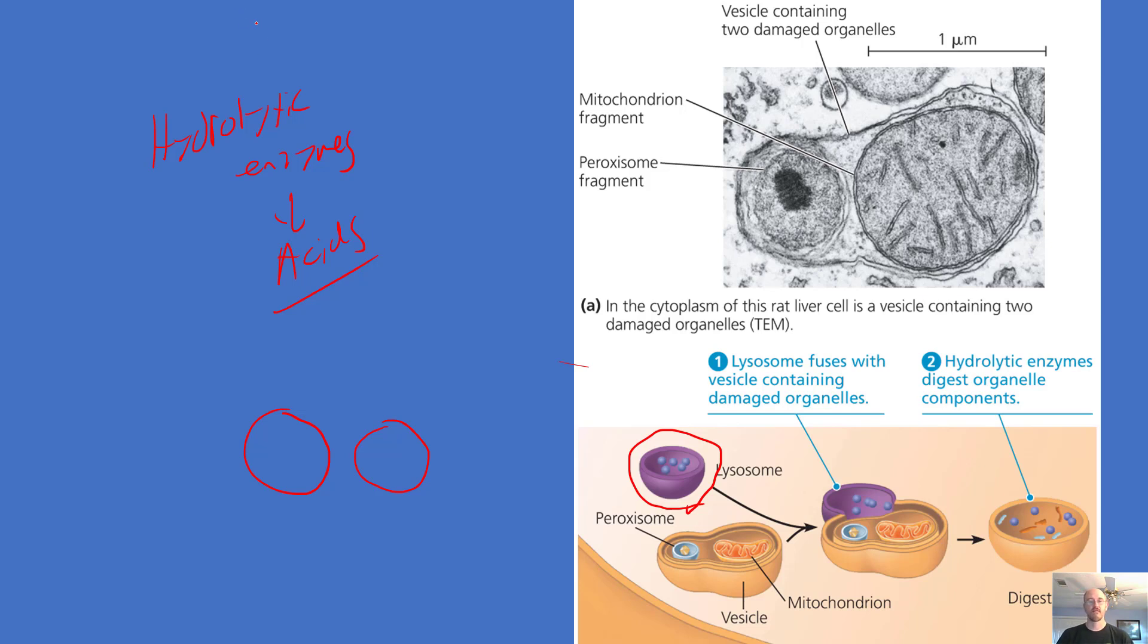This thing is involved in recycling, breaking down old organelles. It can be used to break down and eat bacteria in white blood cells. So defense, in that case. And lysosomes can be used for self-destruction. Sometimes cells self-destruct.